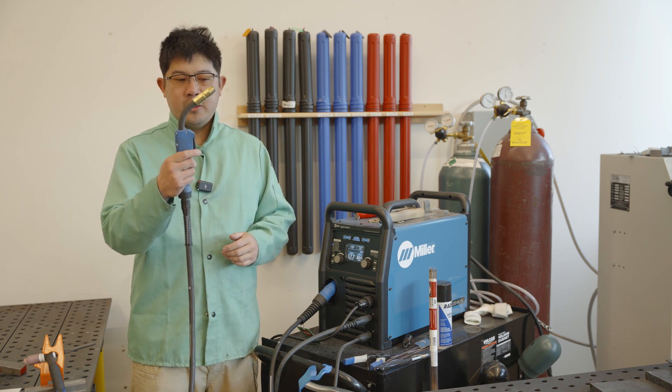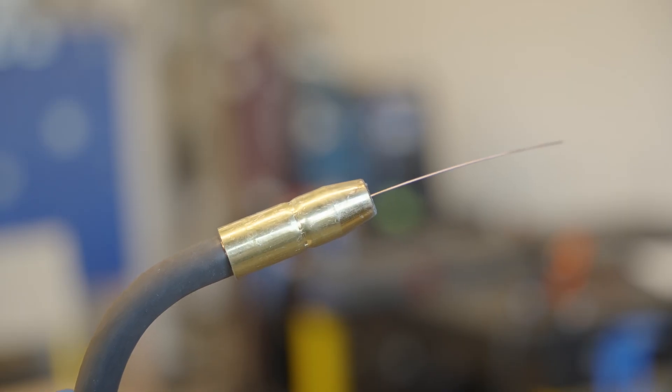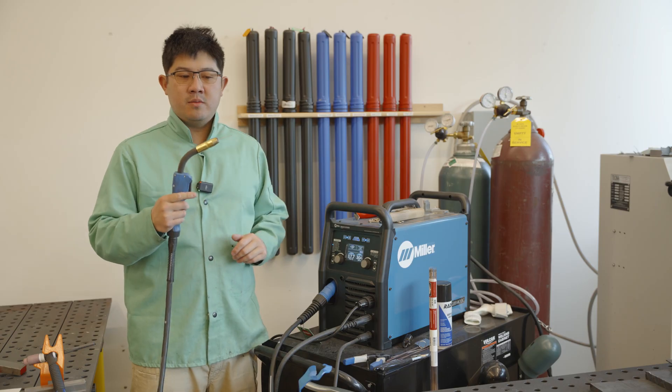Now with the MIG gun, as soon as you hit the button, wire and gas is going to flow out of the nozzle, and that will start your welding process. Okay, so let's get started.